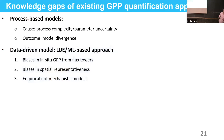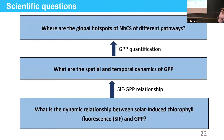Here is the summary of knowledge gaps of existing GPP quantification approaches. In order to improve the accuracy of GPP estimates towards informing NBCS, I propose a more accurate, cost-effective, and scalable approach: solar-induced fluorescence, SIF, to estimate GPP flux. The first question in my study is about the dynamic relationship between SIF and GPP.